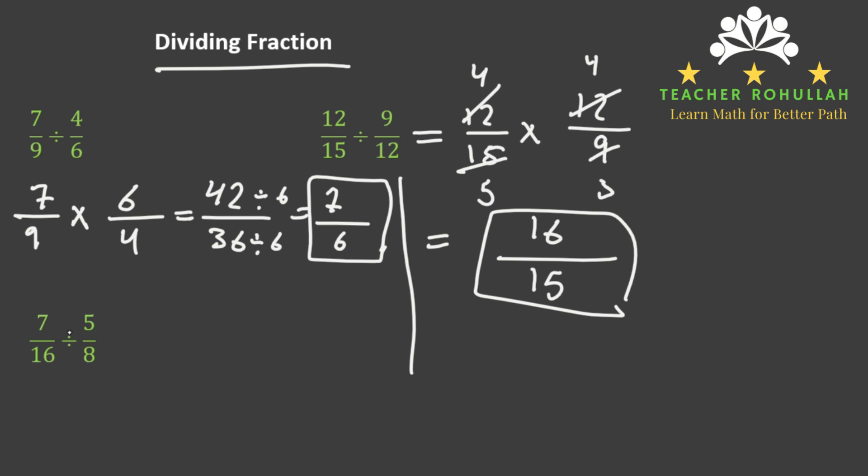In the third example we have 7/16 divided by 5/8. Again we follow the same rule. We write the first fraction which is 7/16 and then multiply it by the inverse of the second one. So inverse of 5/8 is 8/5.